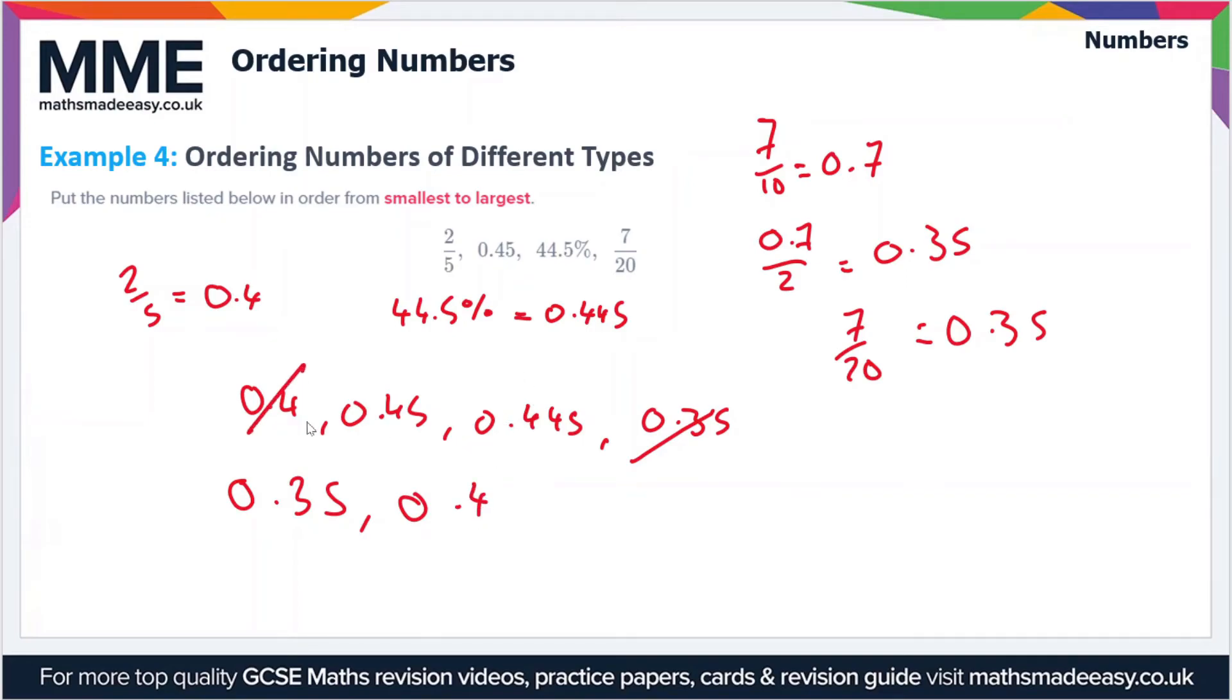Cross that off. Then we have 0.45 and 0.445. Looking at the third digit, this one has a four and this one has a five, so the one with four is smaller. So 0.445 is smaller, then 0.45.